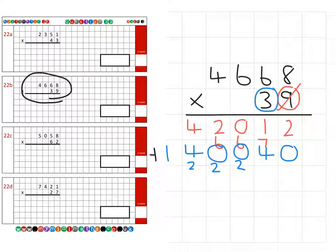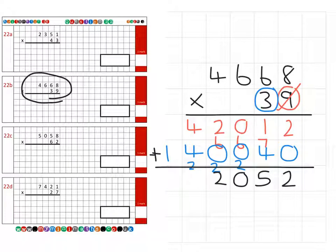Then we add the two rows together. We have 2 units and 0 units is 2. 1 ten and 4 tens are 5 tens. 0 hundreds, 0 hundreds again altogether. We've got 2,000 and 0 thousands, that's 2,000. 40,000 and 40,000 which is 80,000. And then the single 100,000 to give a final answer of 182,052.